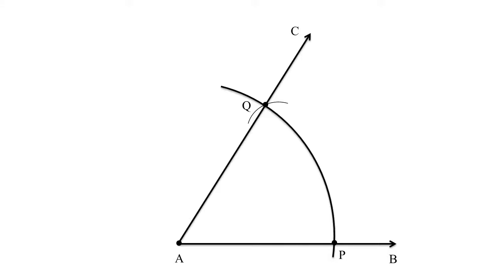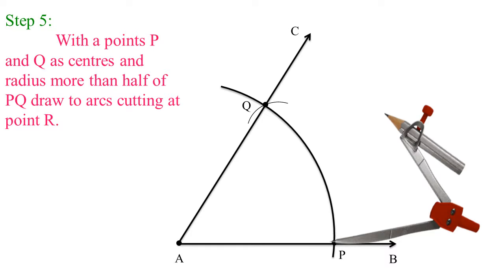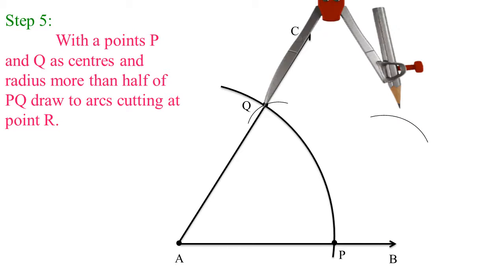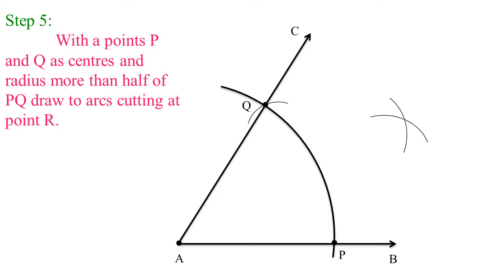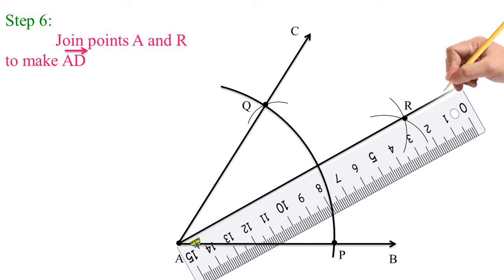Now bisect the angle 60 degrees to get the angle 30 degrees. With points P and Q as centers and radius more than half of PQ, draw two arcs cutting at point R. Take more than half of PQ, with P as the center draw the arc and Q as the center draw another arc. The two arcs cut at point R. Now join points A and R using a ruler to make the ray AD.